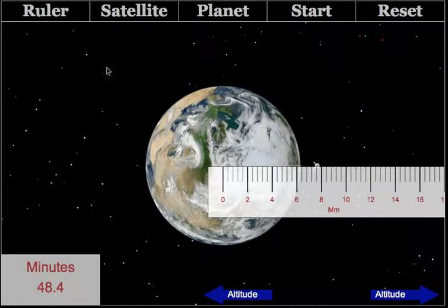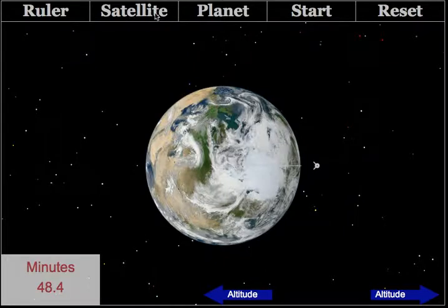Students can employ the ruler. You'll notice in this case the satellite is almost 8 million meters away from the center of the Earth. That would be its orbital radius. They can hide the ruler by clicking again on the ruler mark.